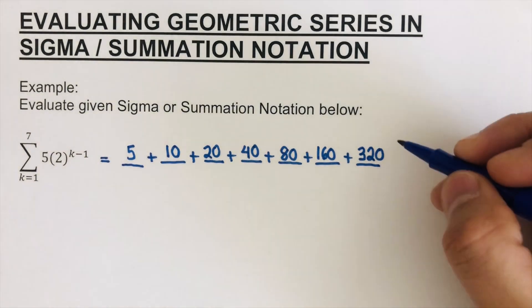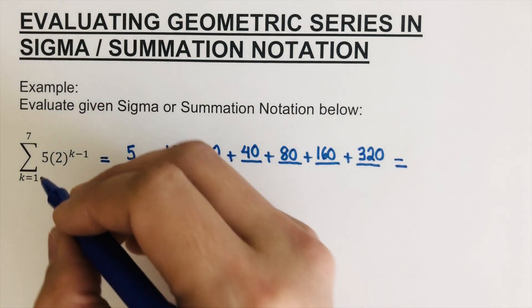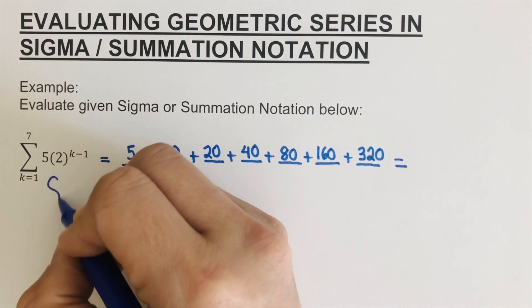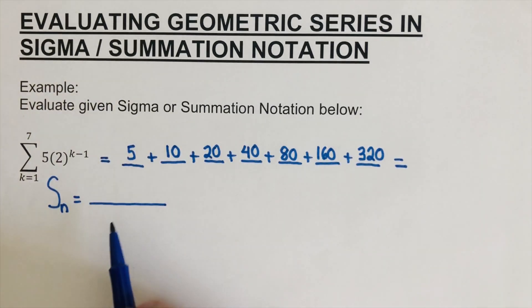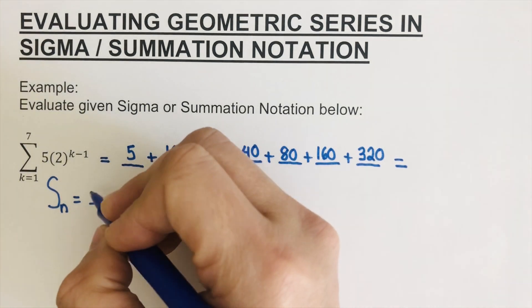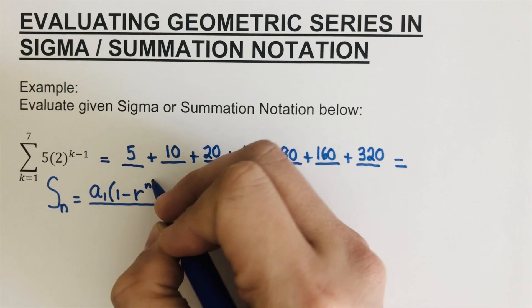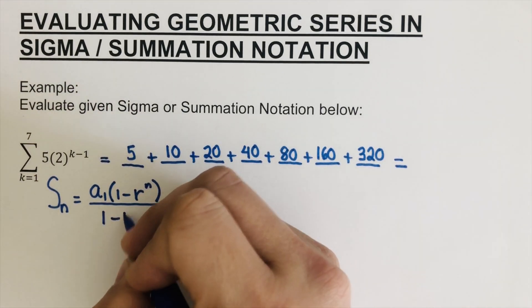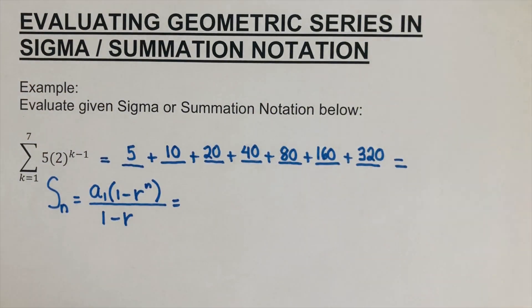The next thing is to evaluate this — find the sum of all of these. We are going to use the equation. The equation for S sub N is equal to A sub one times (1 minus R to the power N) over (1 minus R). If you want to know how we got this equation, I will put the link of the video in the description box below. So we plug in the values.